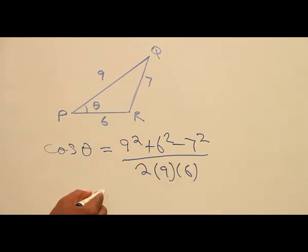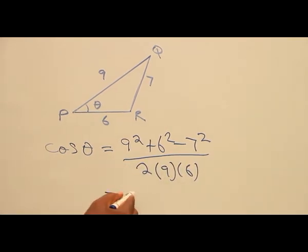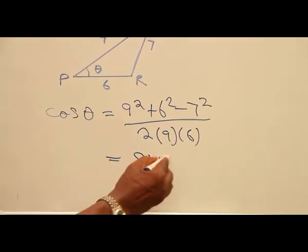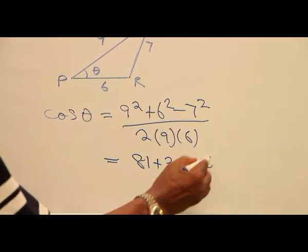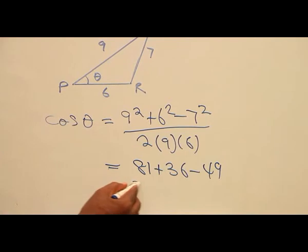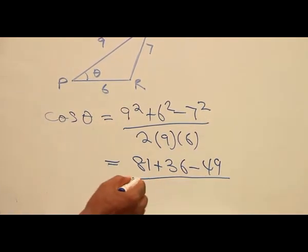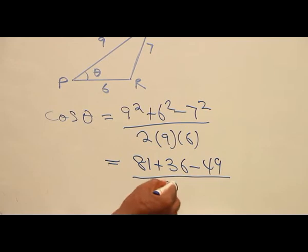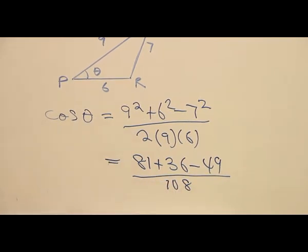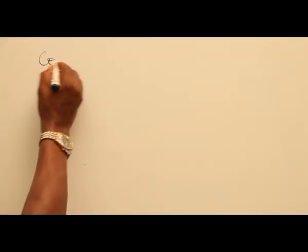So when you have this, you simplify to get 81 plus 36 minus 49, and everything here is divided by 2 times 9 times 6, which is 108. This gives us cos θ.